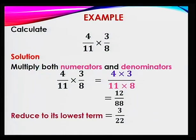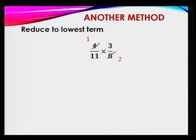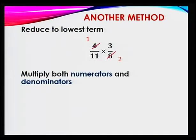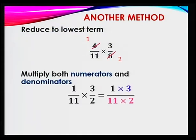Now let's take another method, which is a bit simpler. What do we do? We first reduce to its lowest term before multiplying. That is, the 4 — you can divide it: 4 divided by 4 is 1, and 8 divided by 4 gives you 2. So now you multiply the reduced numerators and denominators: 1 times 3 is 3, and 11 times 2 is 22. So you've got the answer, 3 over 22.